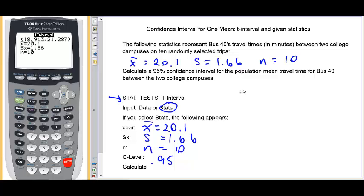Okay, so the confidence interval comes back now to us, 18.9 up to 21.3 roughly.